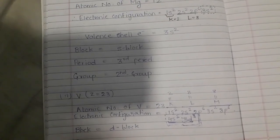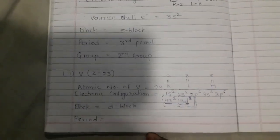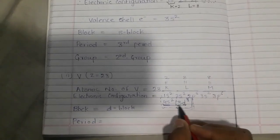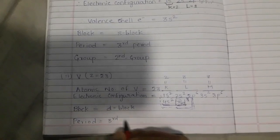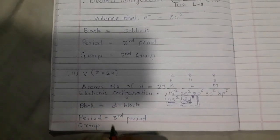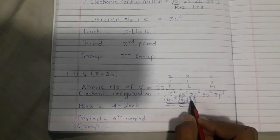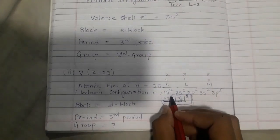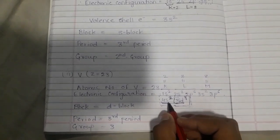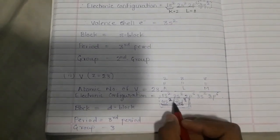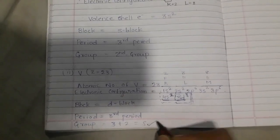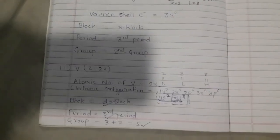For the block, since 4s2 is completely filled we concentrate on the 3d subshell — vanadium belongs to the d-block. For the period, looking at 3d3 the highest principal quantum number in the valence configuration is 4 (from 4s2), so vanadium belongs to the fourth period. For the group, we add the electrons of the 4s and 3d subshells: 2 plus 3 equals 5, so vanadium belongs to the 5th group.